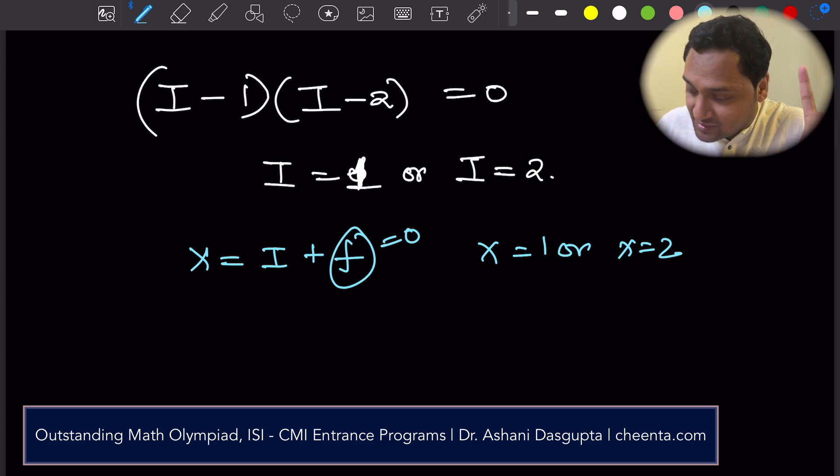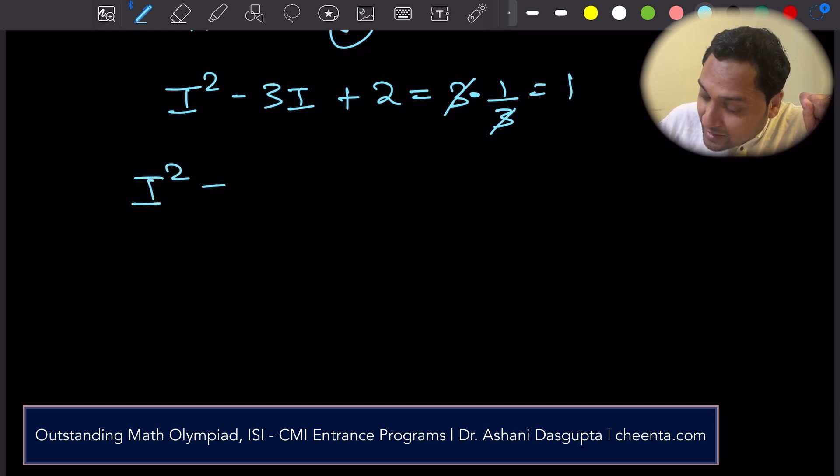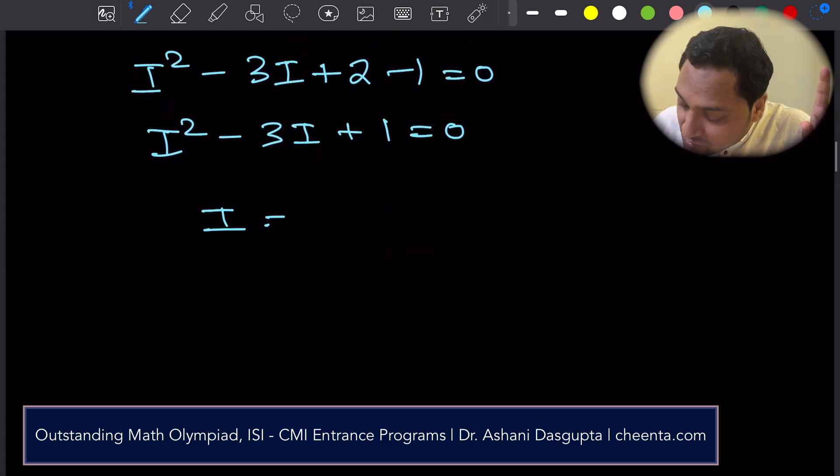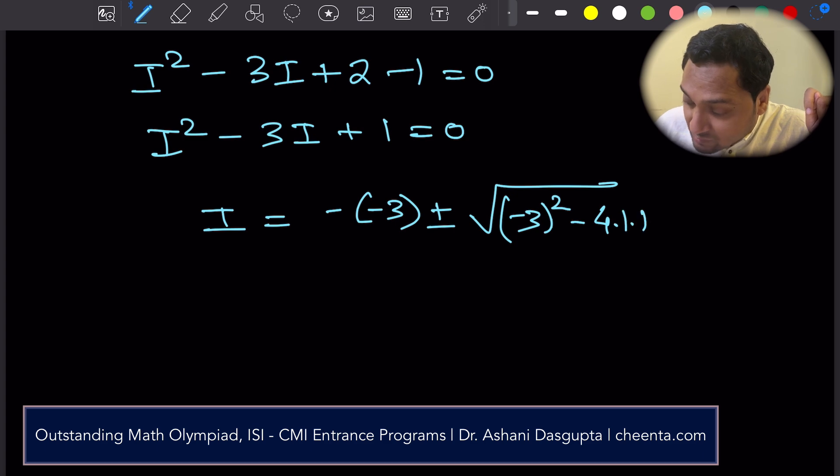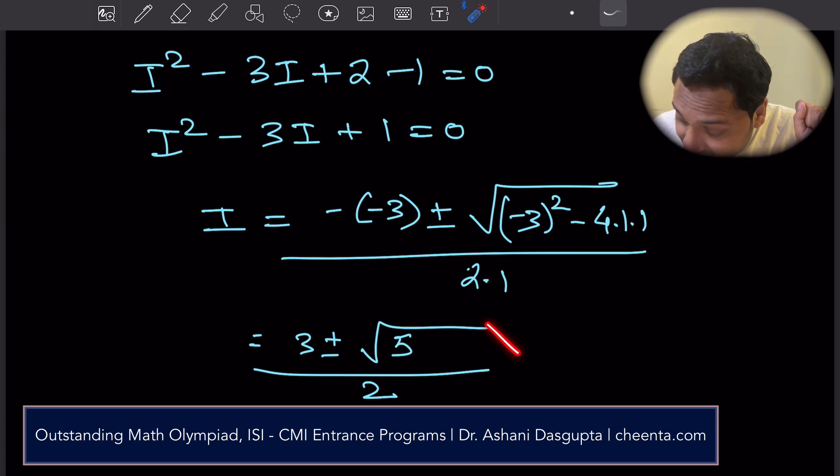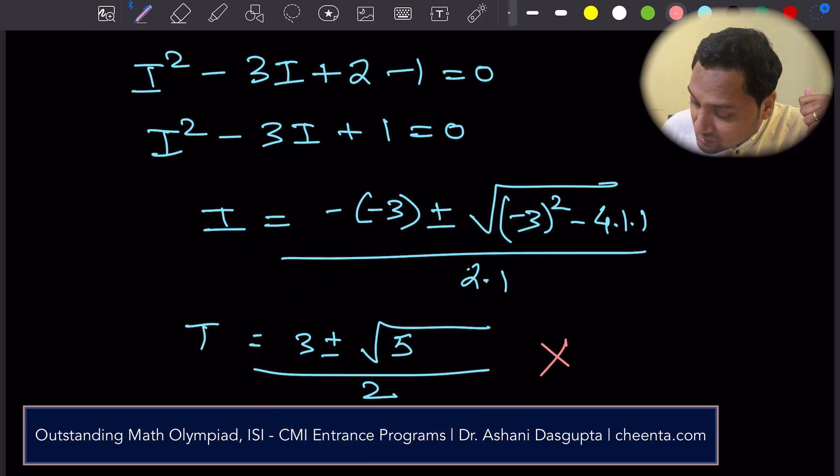Now let's make it 1 by 3. So again, i squared minus 3i plus 2 equals to 3 times 1 by 3, which is 1, which means i squared minus 3i plus 2 minus 1 equal to 0, i squared minus 3i plus 1 equal to 0. Now you can use the quadratic formula. So you have i equal to minus of minus 3 plus minus root over minus 3 whole square minus 4 times 1 times 1 by 2 times 1. This is just the quadratic formula. So this is 3 plus minus root 5 by 2. Now, there is a problem. The right hand side is clearly not an integer and the left hand side is an integer. i is an integer. So there is no solution. f equal to 1 over 3 does not yield any solution.